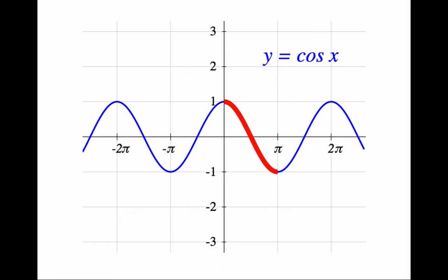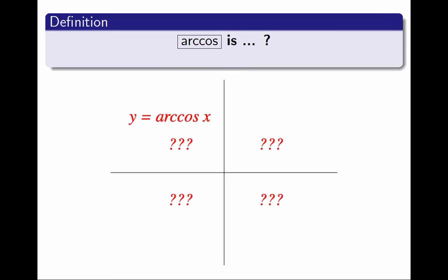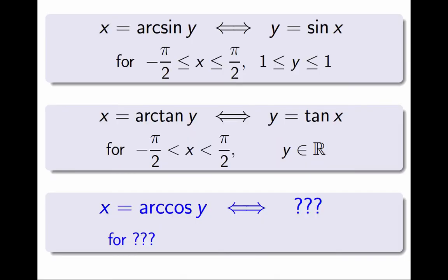By now you should be having a feeling of déjà vu, so perhaps you can do the rest? Can you define arccosine? Can you sketch its graph? And can you write the corresponding statement, like the ones I wrote for arcsine and arctangent?